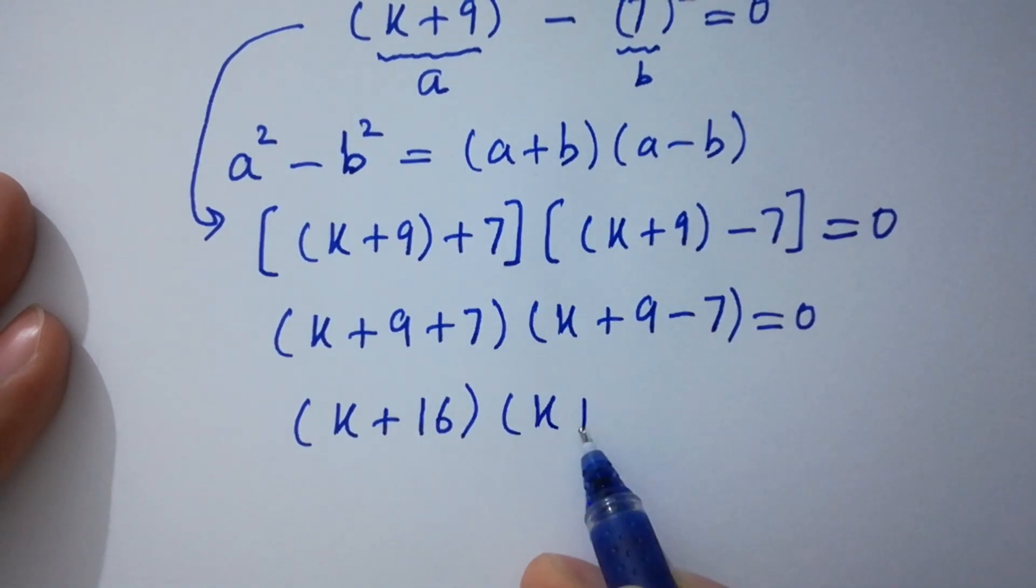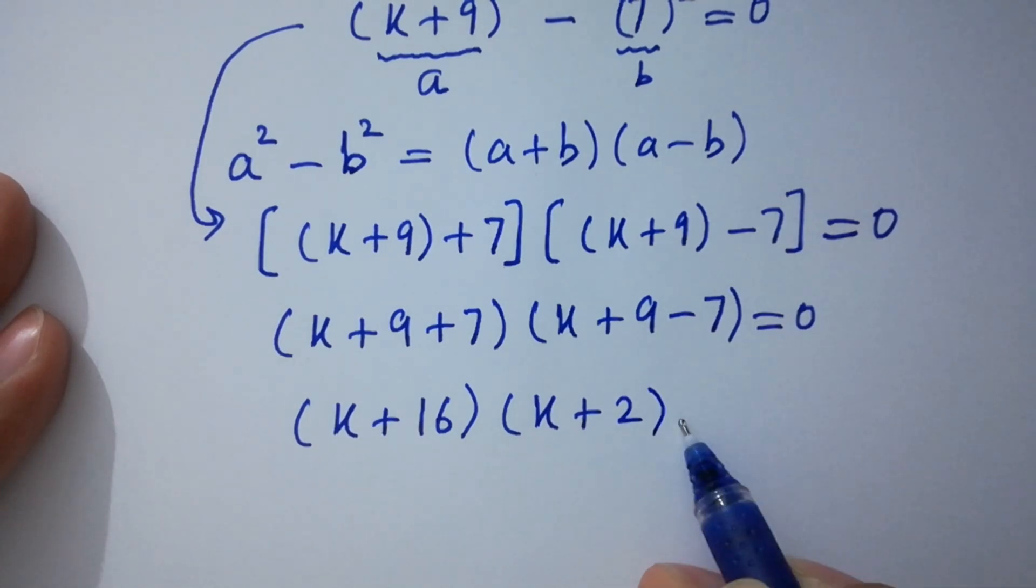And next, we have k + 9 - 7, we have 2 equal to 0.